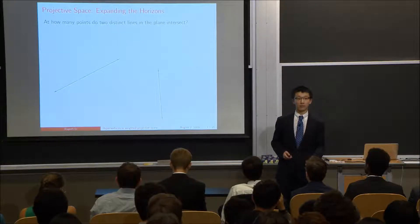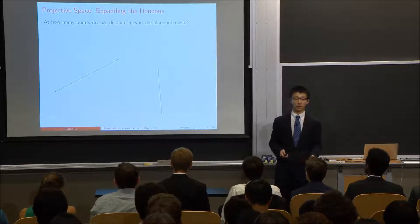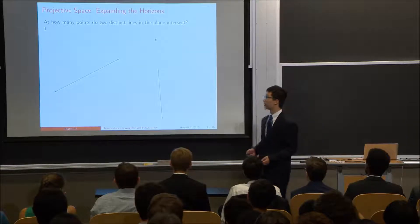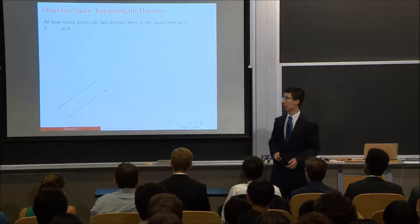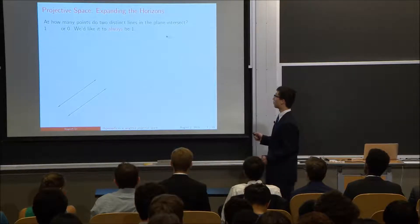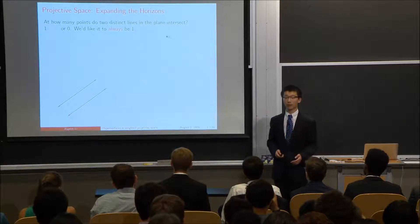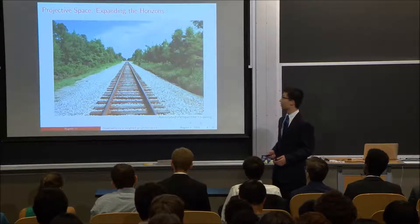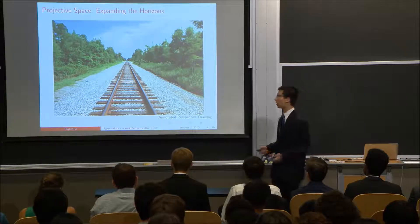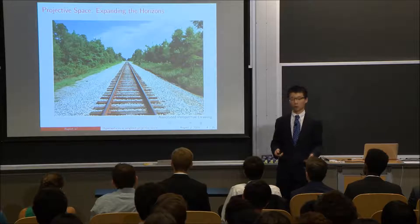To set the background on projective space, I'm going to ask the question: at how many points do two distinct lines in the plane intersect? Typically the answer is one, but it could be zero when those lines are parallel. But that's unsatisfactory because we'd like it to always be one. So we'll introduce a point at infinity such that these two lines intersect infinitely far away. You can view this through the lens of perspective drawing. So these two railroad tracks are parallel, but they do intersect at this point in that drawing.